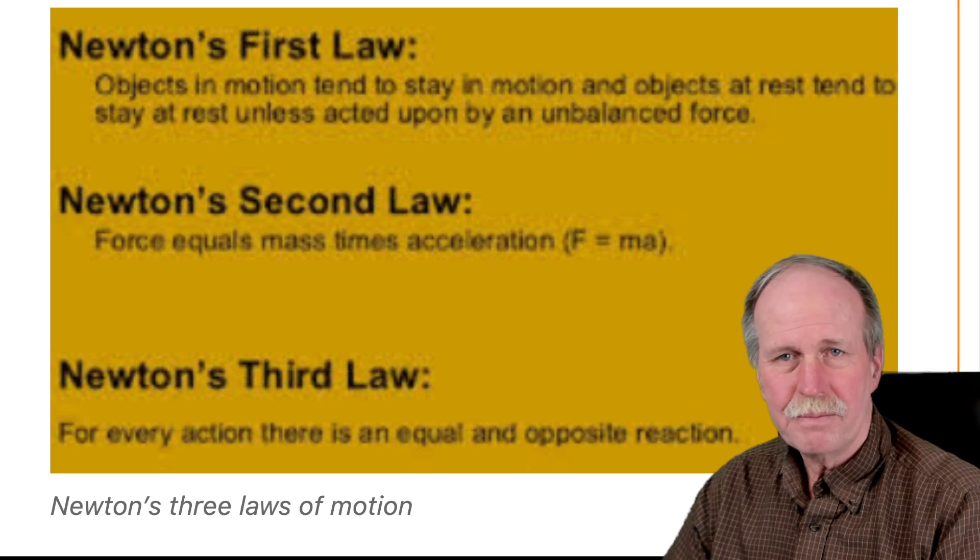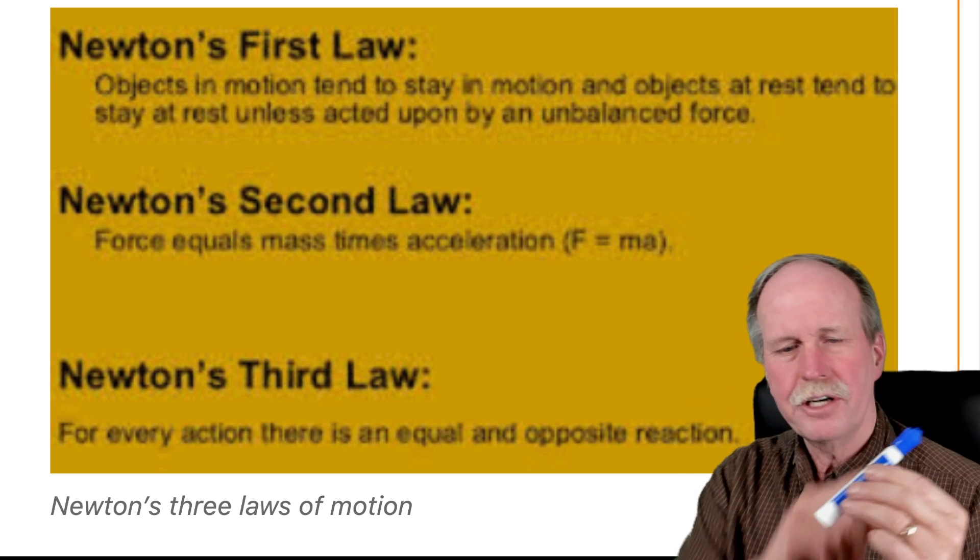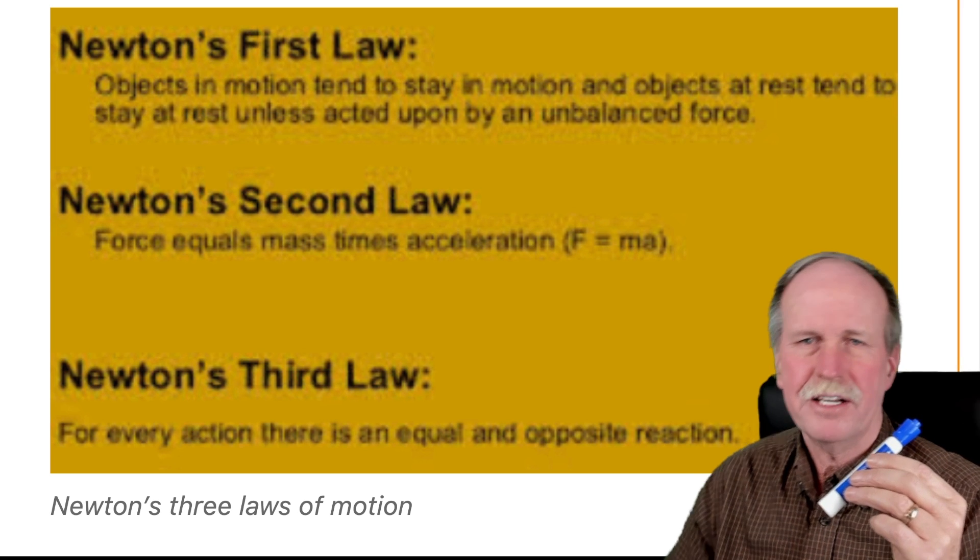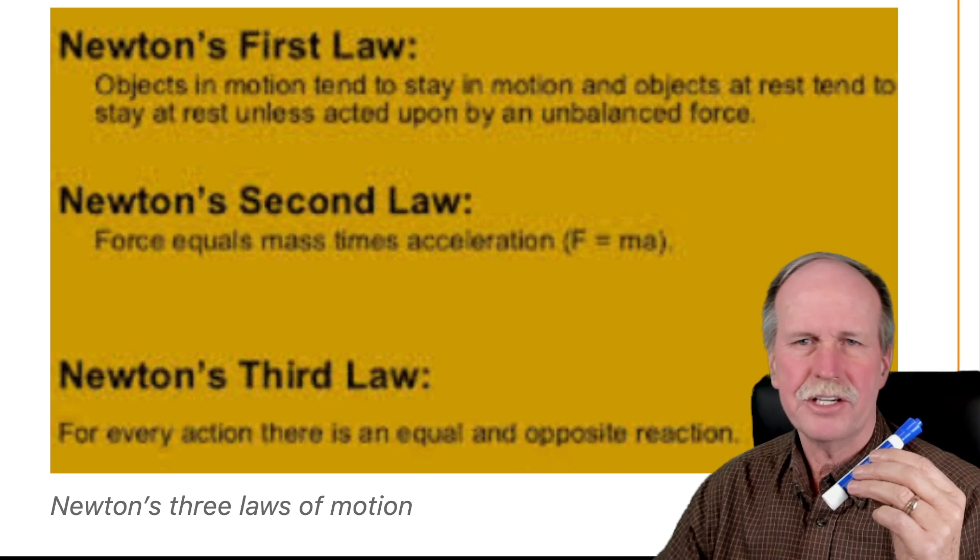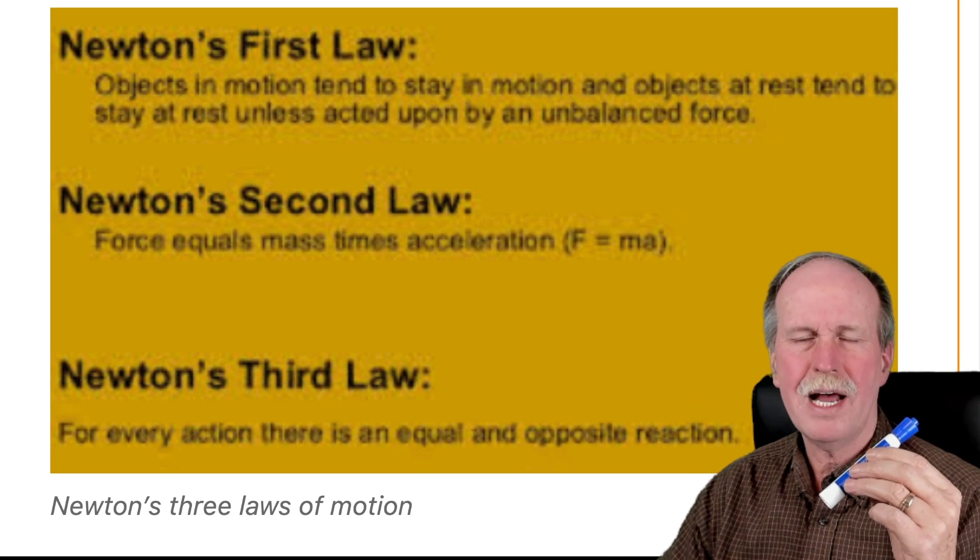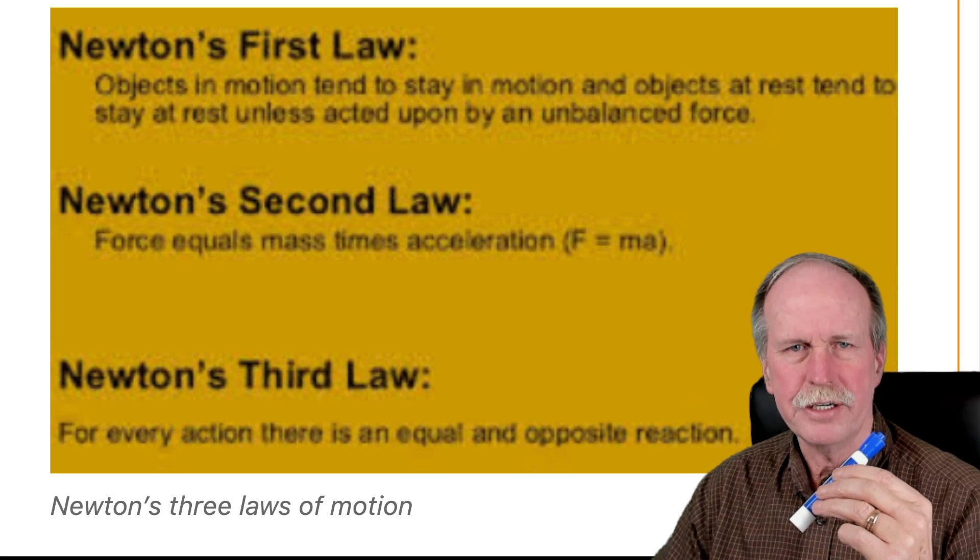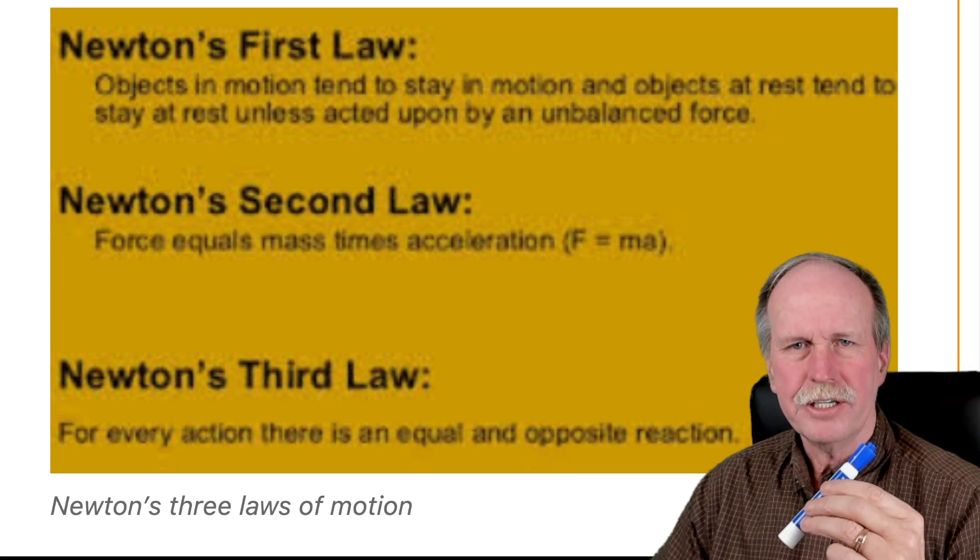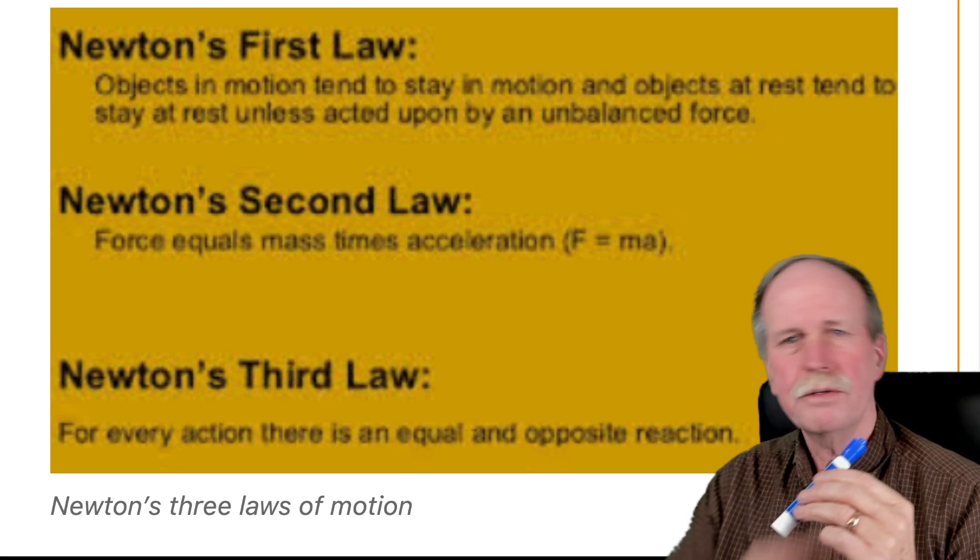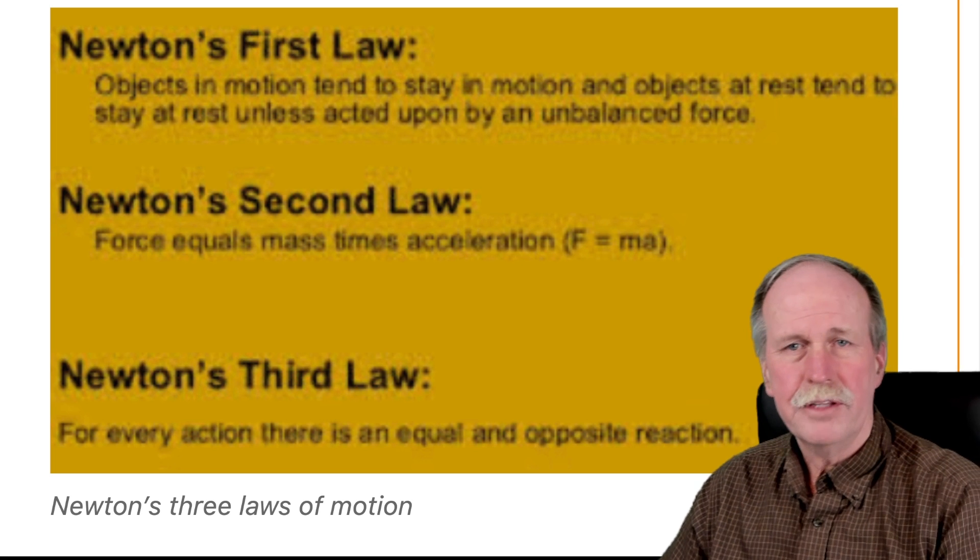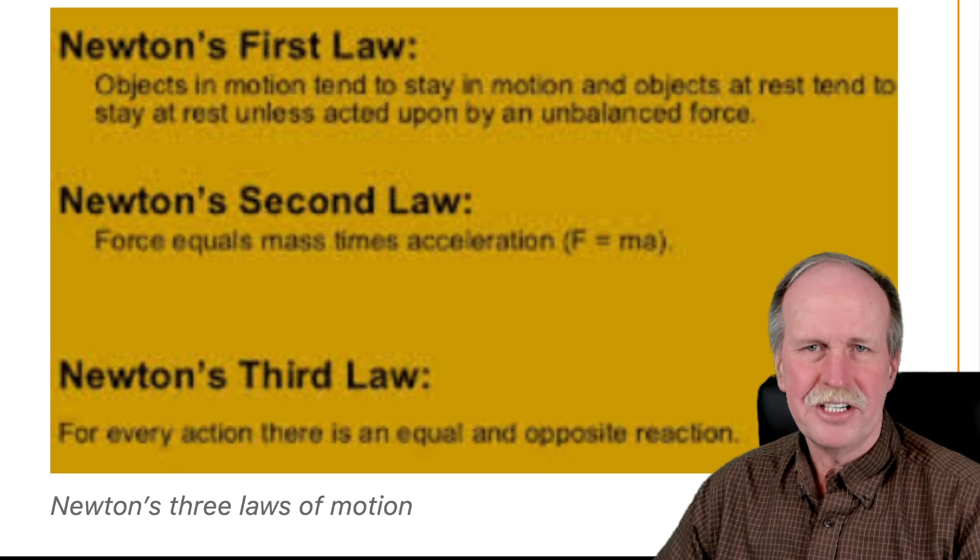So why do rockets work in space? It's actually rather simple. Say this is a rocket. Here's the nose cone and the rocket engine is down at this end. When this rocket engine lights off, it throws large amounts of mass out of the back end of this rocket at very high velocities. And as you can see by Newton's third law of motion, wherever there's an action, there's an equal and opposite reaction. So as the rocket exhaust is thrown out the back, the rocket goes forward. That's why rockets work in space. That's really the end of it right there.